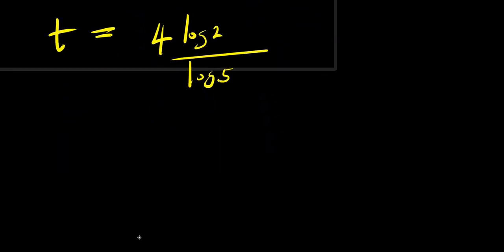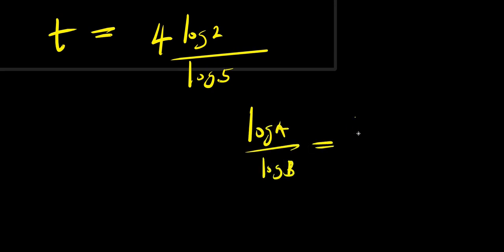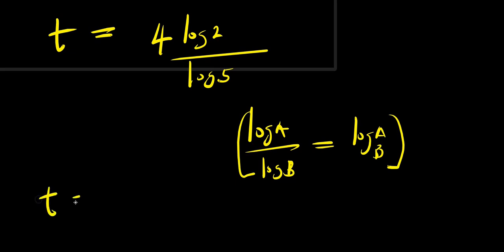Now let's also recall: if you have log a divided by log b, this equals log a to the base of b. So from here we have t equals 4 times log 2 to the base of 5. That is our solution.